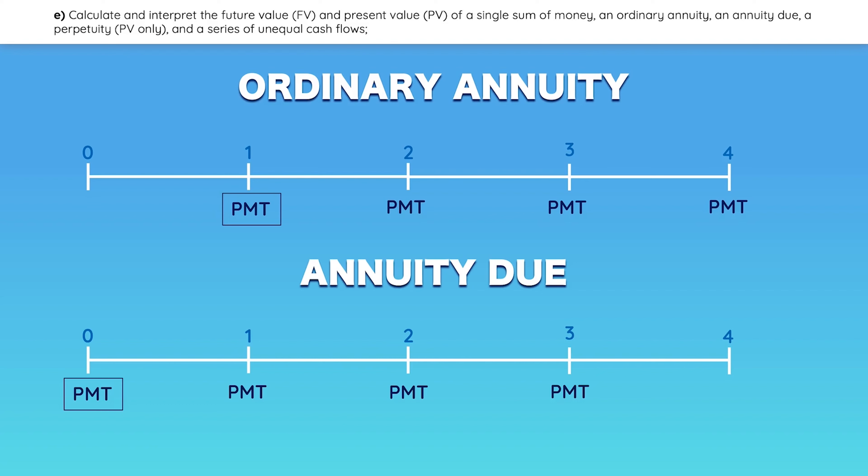But why would that be a problem? For the ordinary annuity, the calculator will give you the present value at time 0, which is one period before the first payment is due. But for the annuity due, the first payment happens at the beginning of the period, so we need the present value at the same time as that first payment, not one period before.